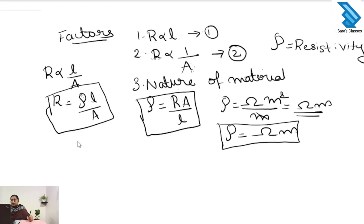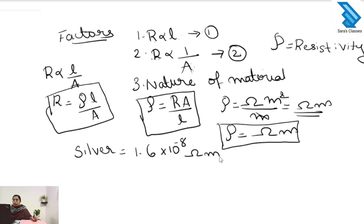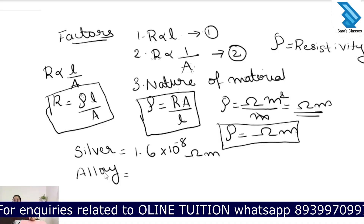Next we will see the resistivity of some materials. First, the resistivity of silver is 1.6 × 10⁻⁸ ohm meter. For an alloy such as manganin, the resistivity is 44 × 10⁻⁸ ohm meter.